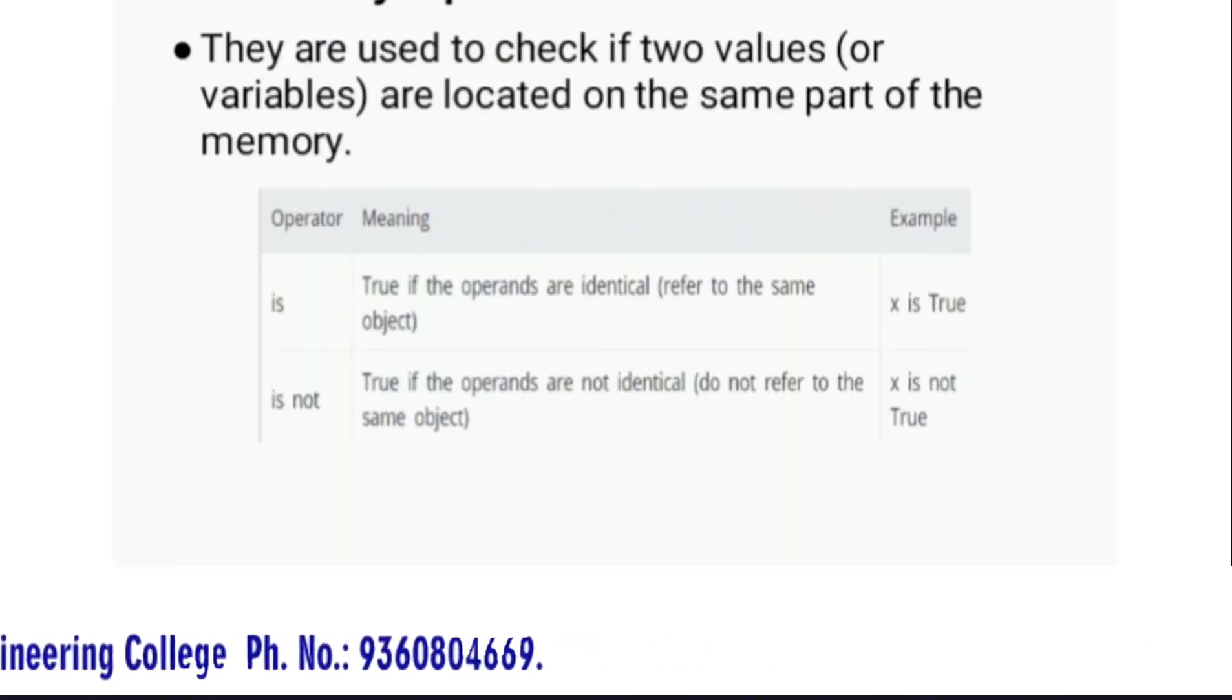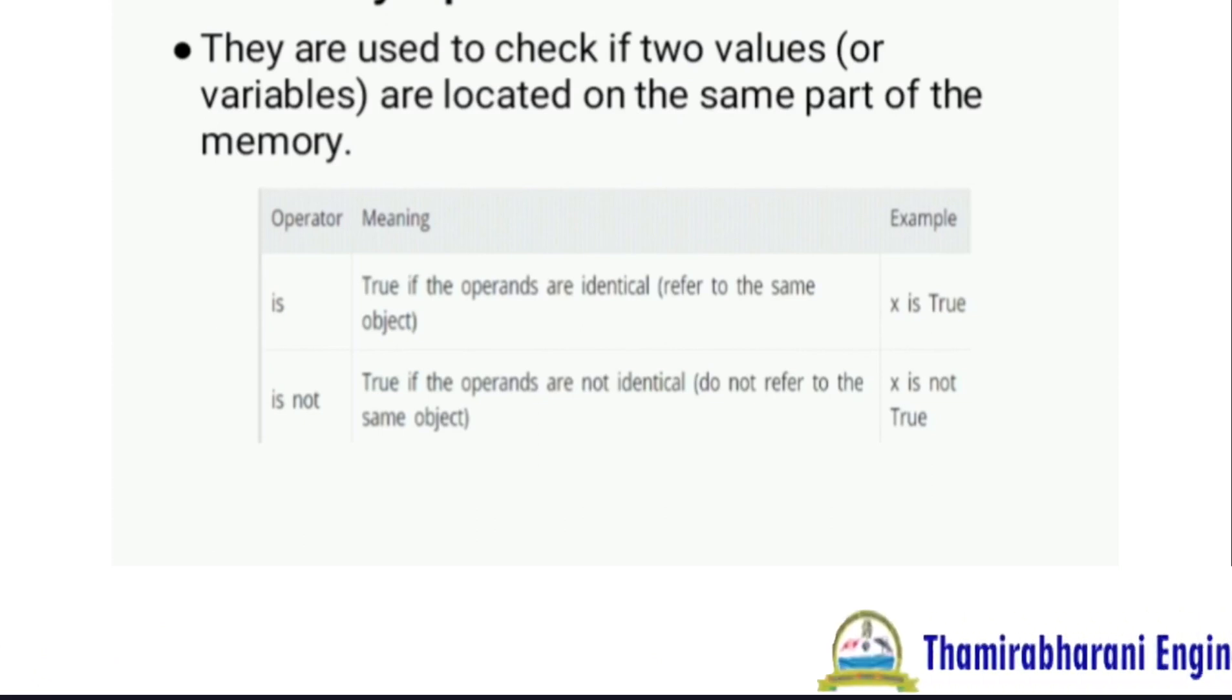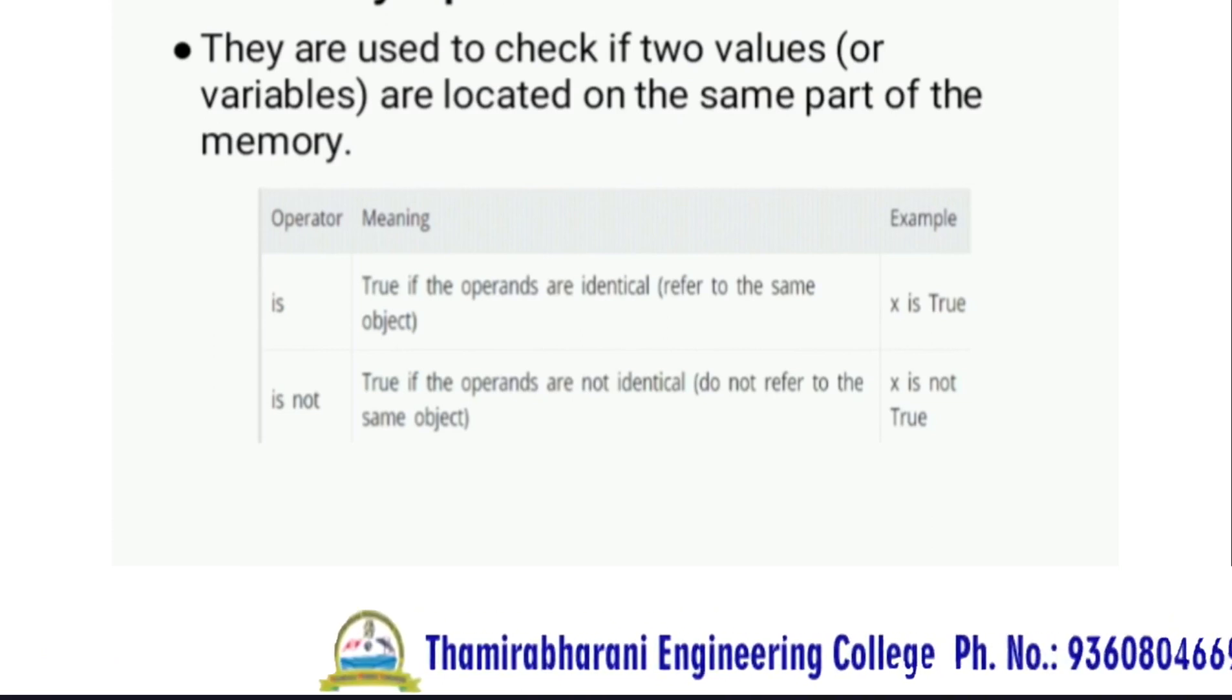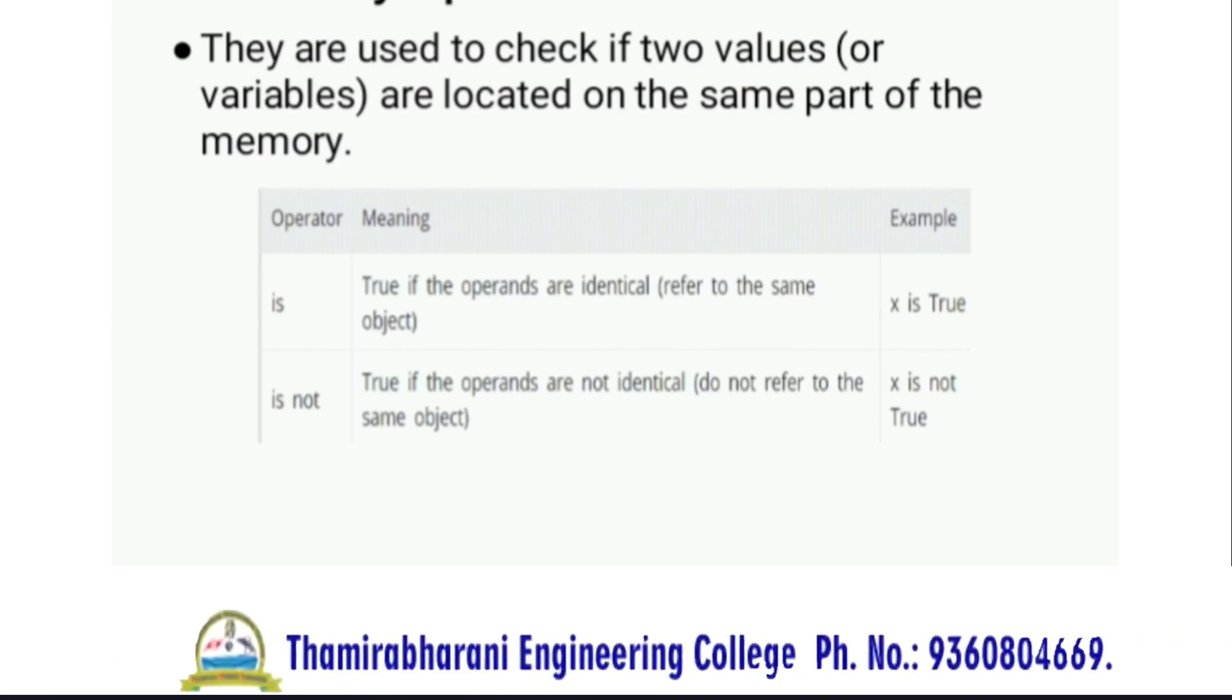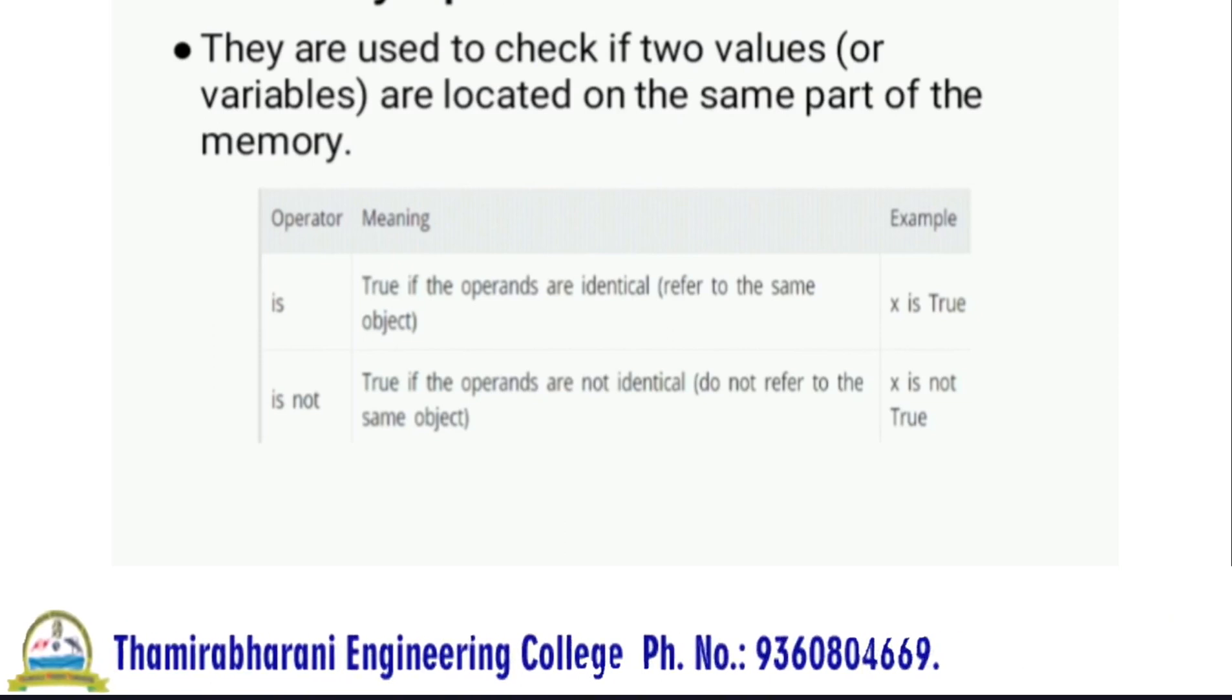Identity operators are used to check if two variables are located in the same part of memory. The 'is' operator returns True if operands are identical. The 'is not' operator returns True if operands are not identical.